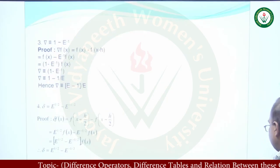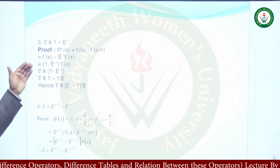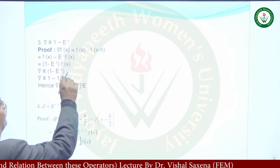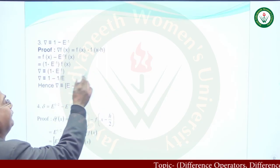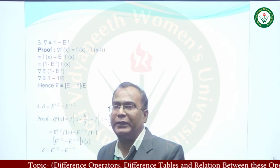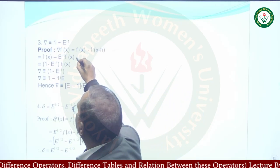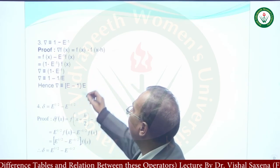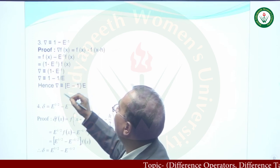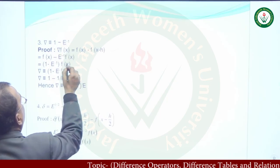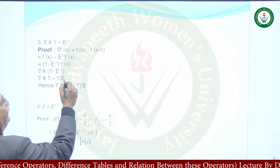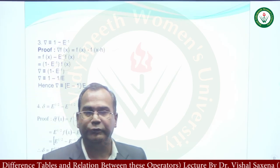The third relation is: nabla equals 1 minus E inverse. We take nabla of f(x) = f(x) minus f(x minus h), by definition. Now f(x minus h) can be written as E to the power minus 1 of f(x). So nabla of f(x) = f(x) minus E⁻¹ f(x). Taking f(x) common: nabla of f(x) = (1 minus E⁻¹) of f(x). Comparing both sides: nabla = 1 minus E⁻¹.